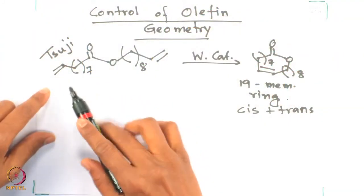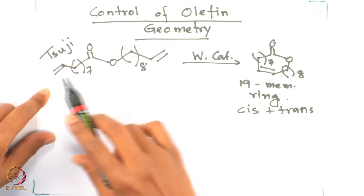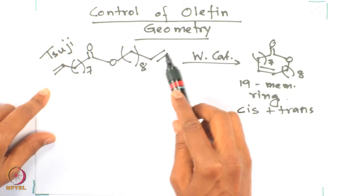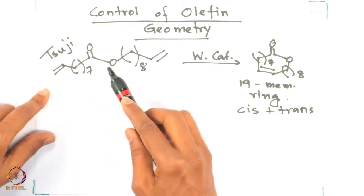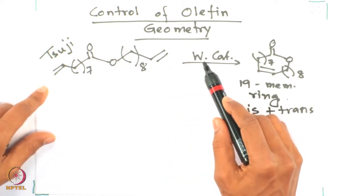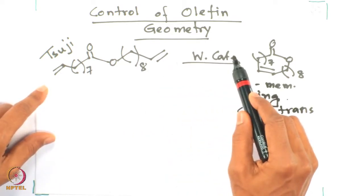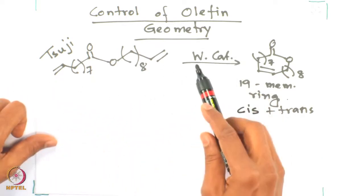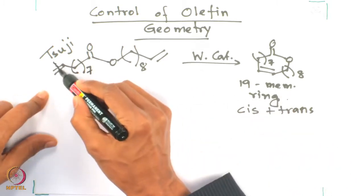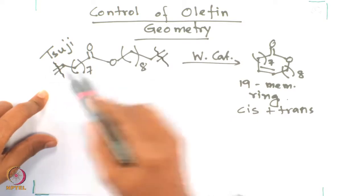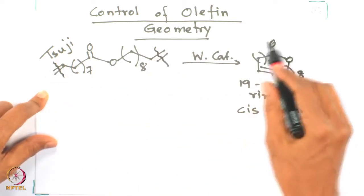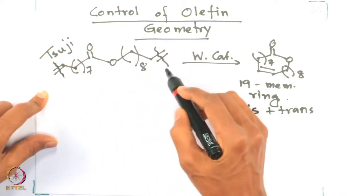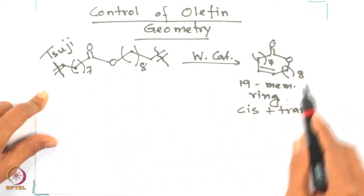Looking at this molecule, this is reported by Shuji — the two olefins are on the terminal positions, interlinked by an ester. In the presence of a tungsten catalyst, ring closing metathesis proceeds. Overall, reacting these two terminal olefins gives a 19-membered ring: 7 from one alkyl part, 8 from the other, making a 19-membered ring overall.